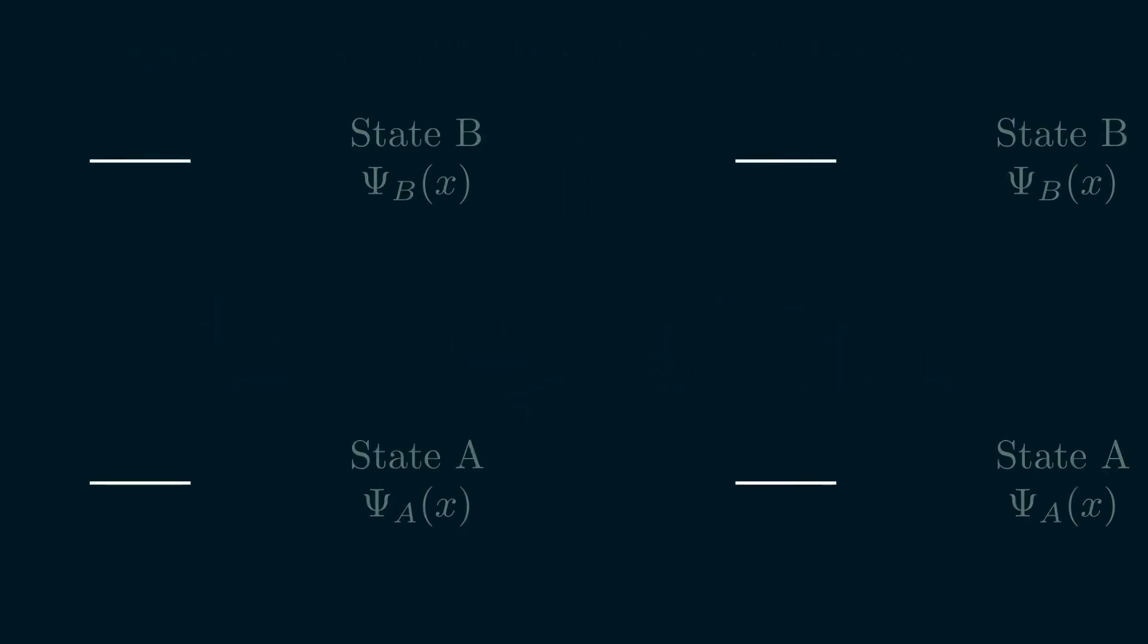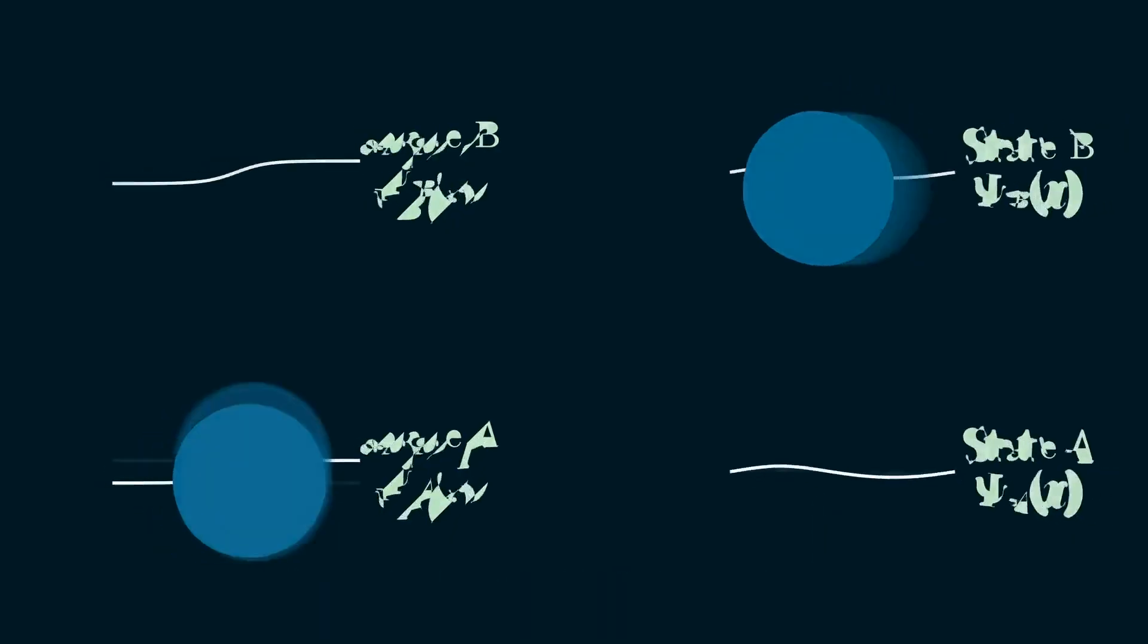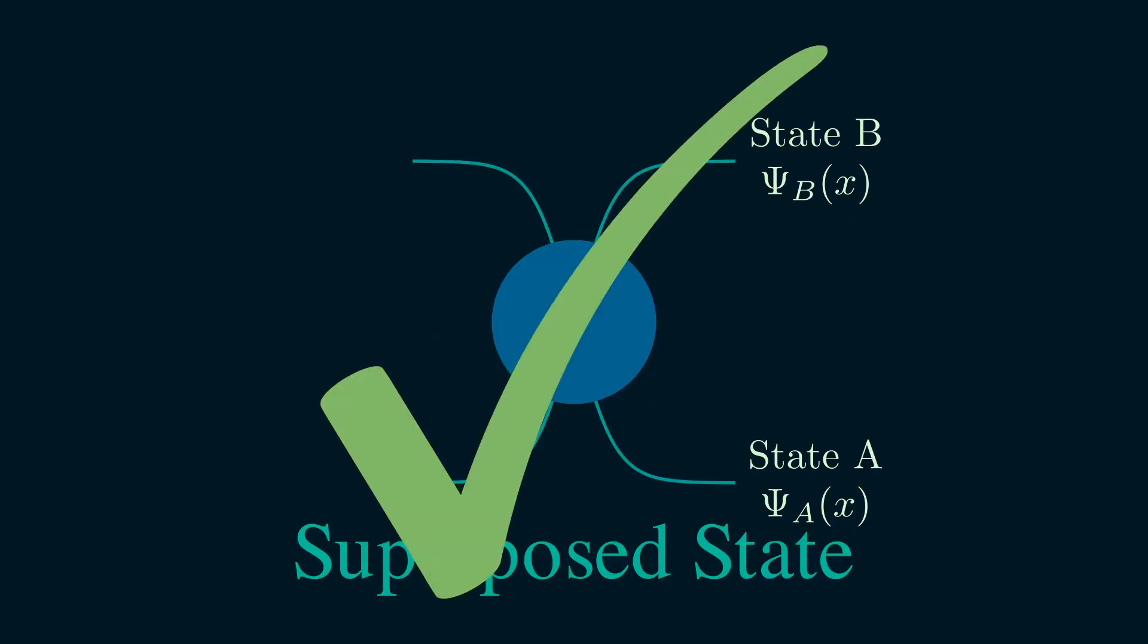If states A and B are two valid states for a particle to be in, then quantum mechanics says that it can also be in a state denoted by Ψ_A plus Ψ_B since this is also a solution to the Schrödinger equation.